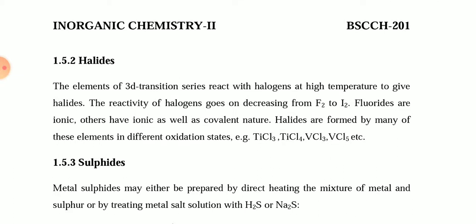The second type of binary compounds are halides. The elements of the 3d transition series react with halogens at high temperature to give halides. The reactivity of the halogens decreases from F₂ to I₂. Fluorides are completely ionic, while others have both ionic and covalent nature. Halides can be formed in variable oxidation states, for example TiCl₃, TiCl₄, VCl₃, and VCl₅.